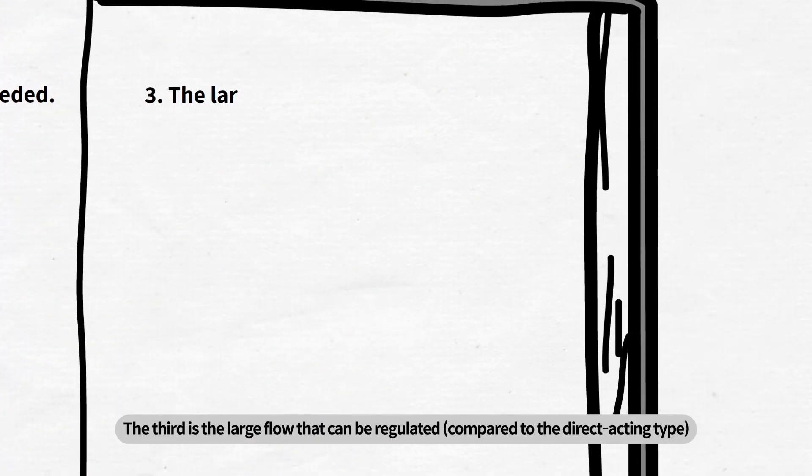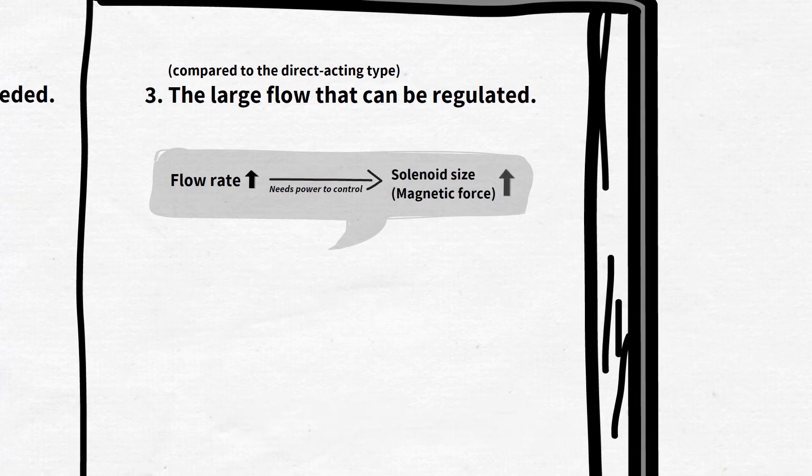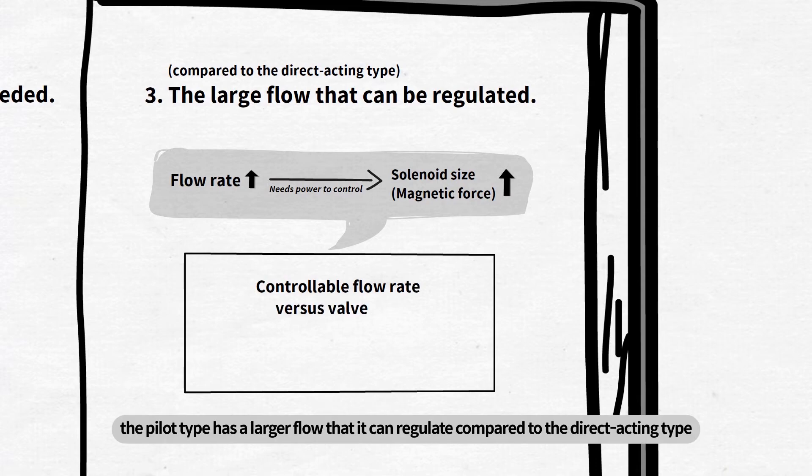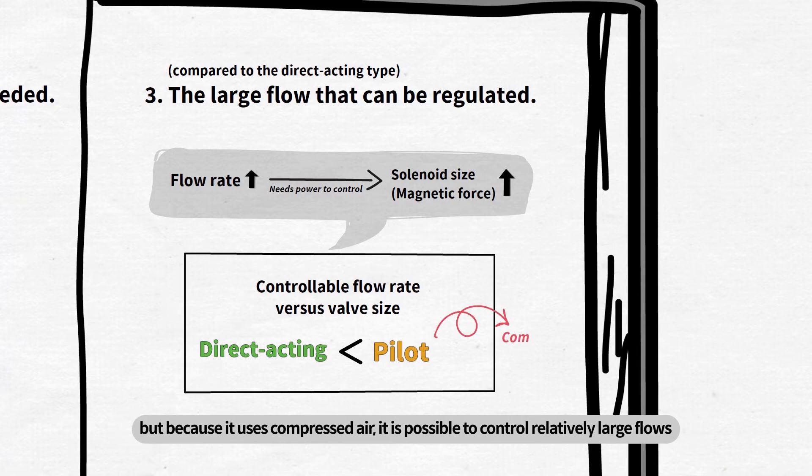The third is the large flow that can be regulated. The solenoid must be larger to control larger flows. When comparing with similar valve sizes, the pilot type has a larger flow, so it can regulate compared to the direct acting type. The pilot type does not control flow solely with the magnetic force of solenoid valve, but because it uses compressed air, it is possible to control relatively large flows.